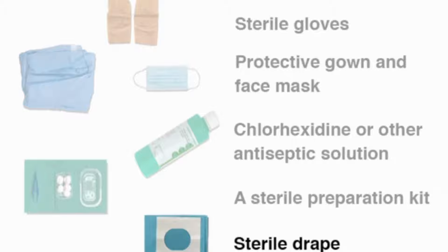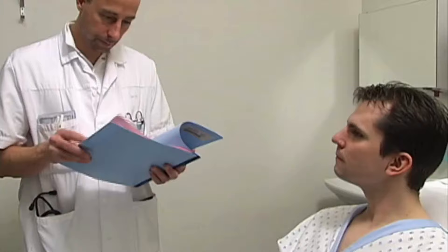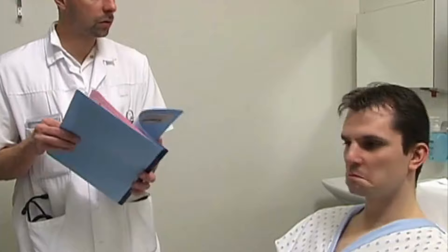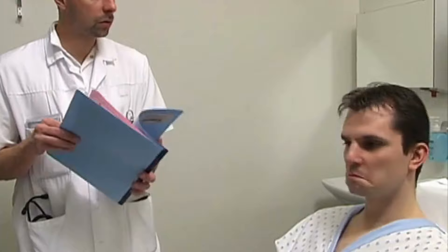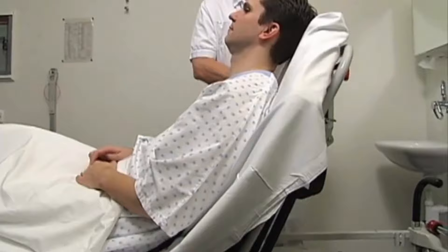Explain the procedure to the patient and obtain written informed consent, confirming the patient's identity, the indication for needle aspiration, and the absence of contraindications. Then confirm that the patient has no allergy to lidocaine and verify whether the pneumothorax is on the right side or the left side. Place the patient in a semi-supine position with the torso at a 30-45-degree angle to allow the air to collect at the apex of the lung.